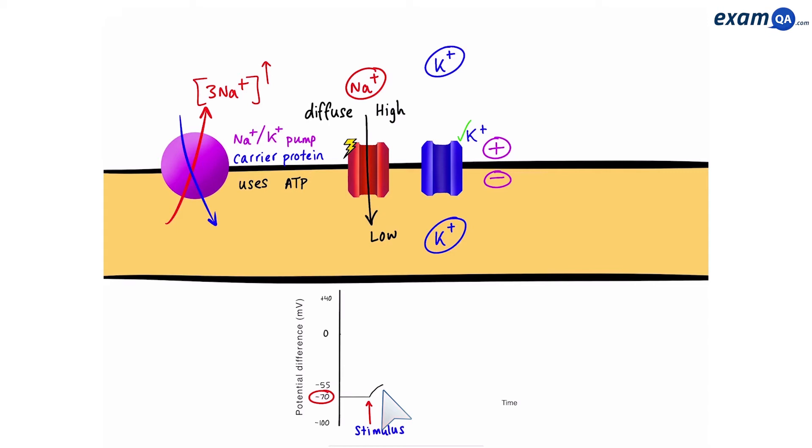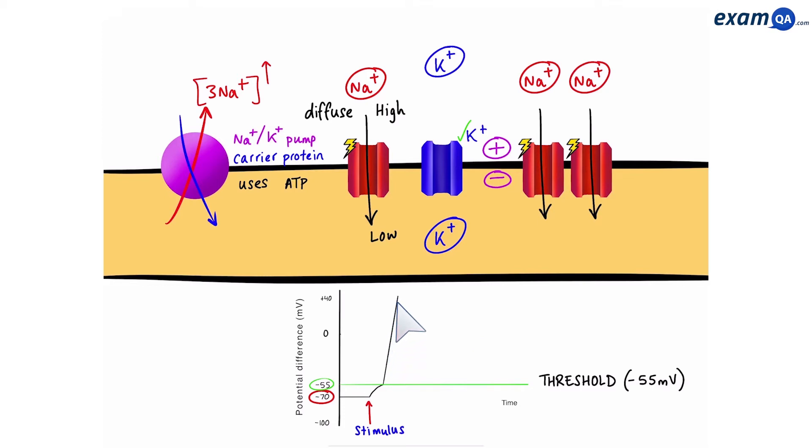Now, the moment it hits minus 55 millivolts, at this point, we've reached a threshold. This is very important because sodium channels, which are voltage gated, love this charge. So, they're all going to open up. Now, we have loads of sodium channels, which have all opened up, because they're at the right threshold. This means even more sodium can enter the neuron, and the charge rushes up all the way to plus 40.